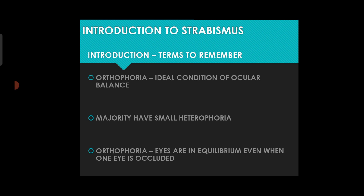There are three conditions to remember: latent strabismus and manifest strabismus. Latent squint means there is a misdirection of the visual axis, but with good muscular control from the extraocular muscles, we can still maintain good fusion using eye movements. That is latent strabismus.